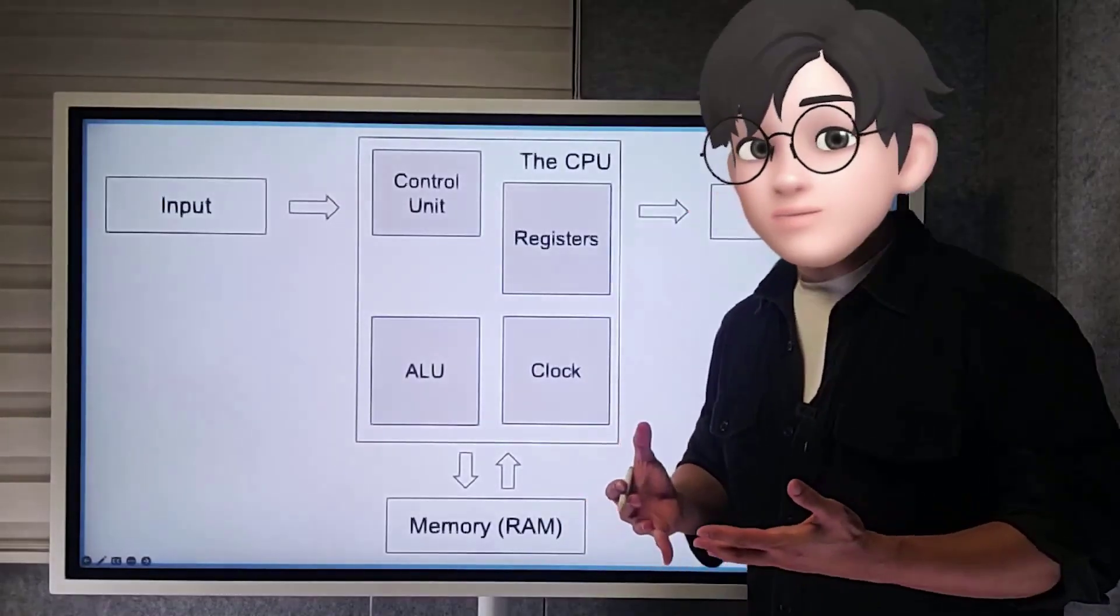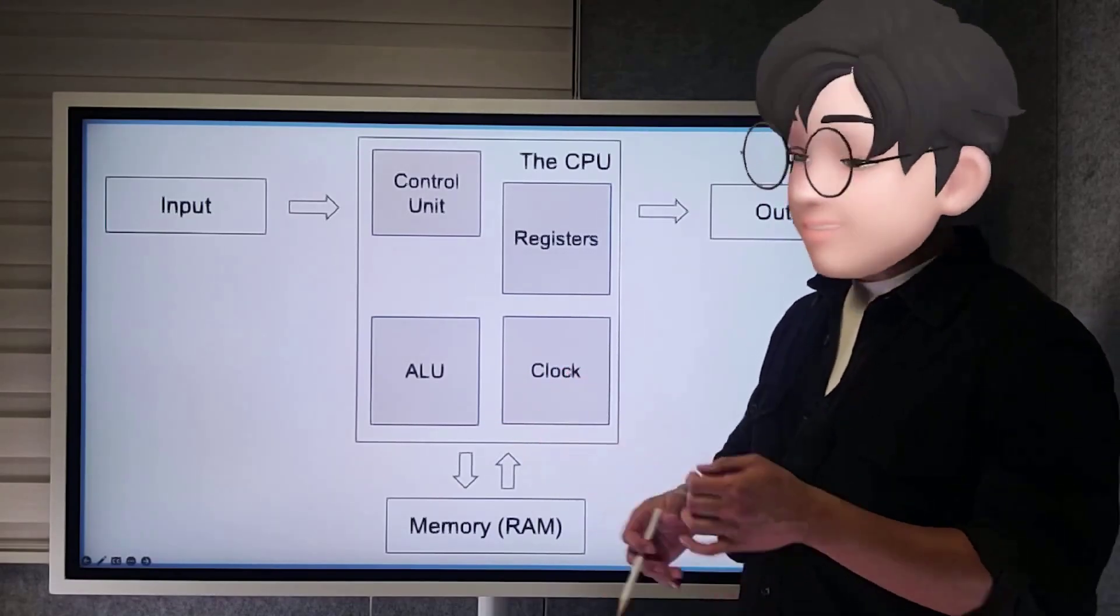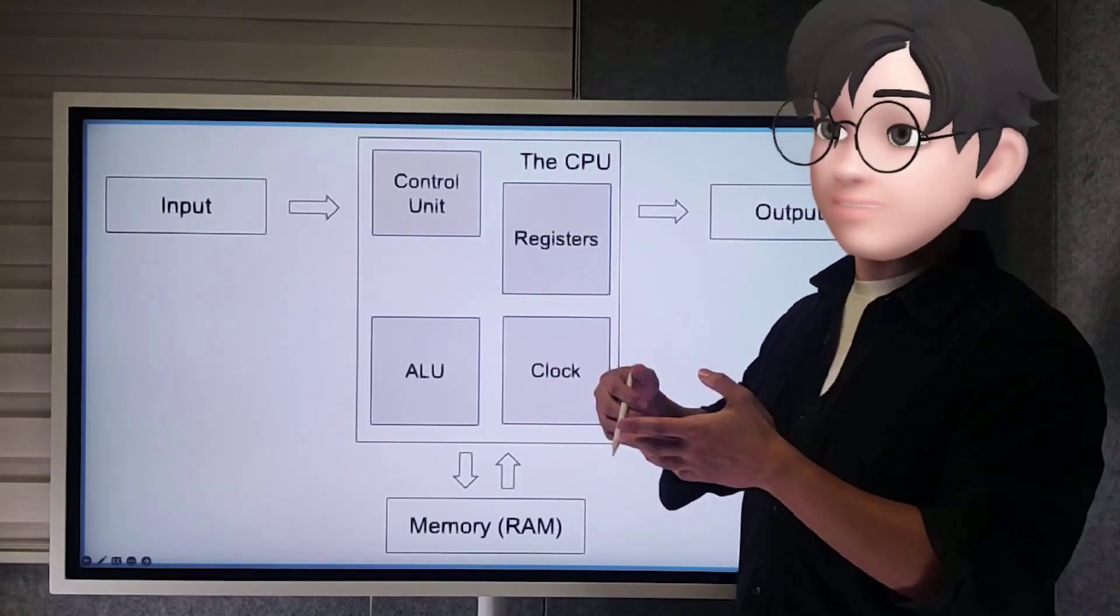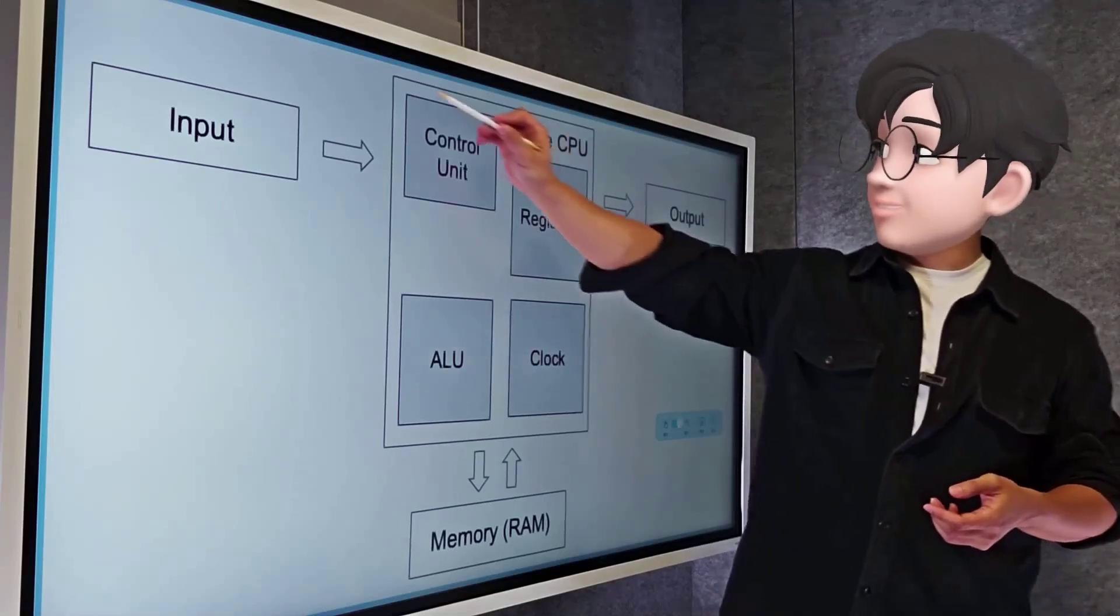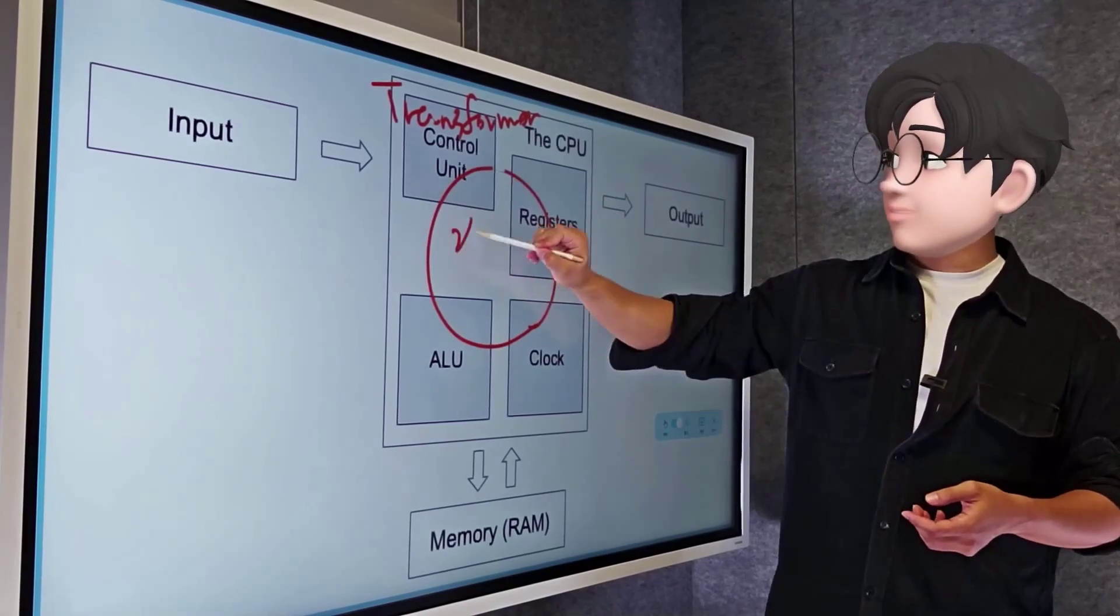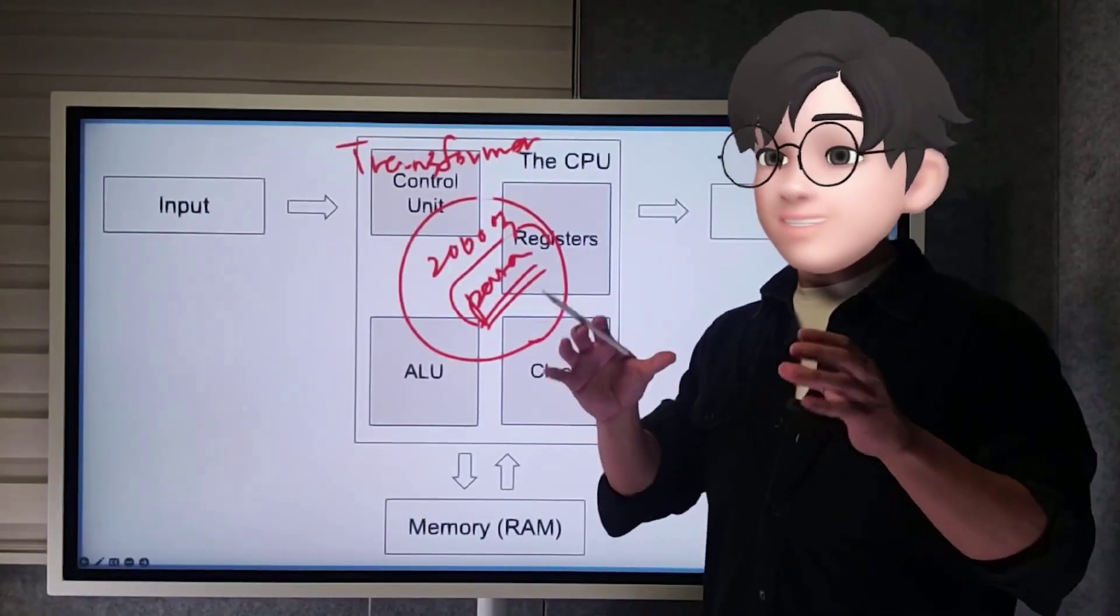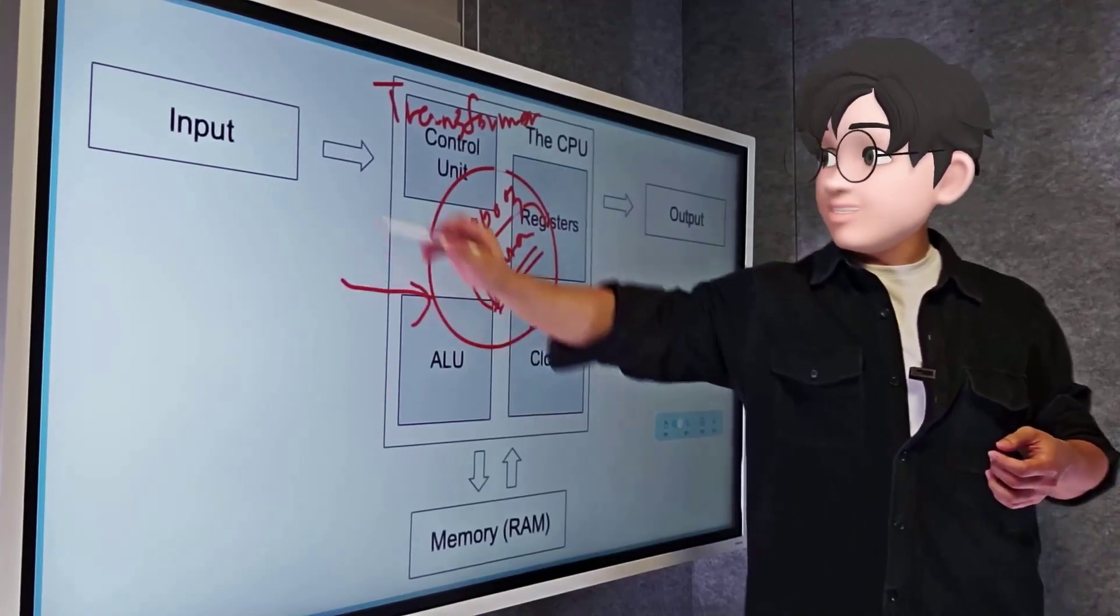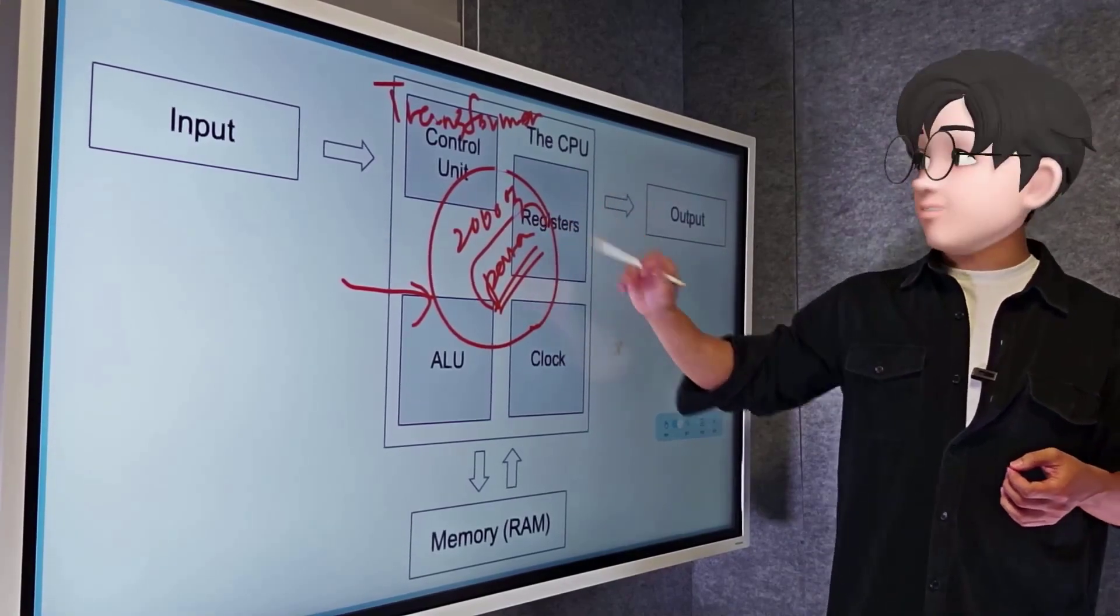When we commonly talk about AI models, we refer to weights. The number of parameters in GPT 3.5 is 175 billion, and in some other models, it can go up to an impressive 200 billion. These weights are essentially numbers that are determined after continuous data training sessions. So, these weights become fixed. For example, in the case of the transformer model, these weights remain constant. The model's 200 billion weights are fixed at specific values and do not change. Instead of directly storing past states, it only retains memory within the input context window while processing the data.